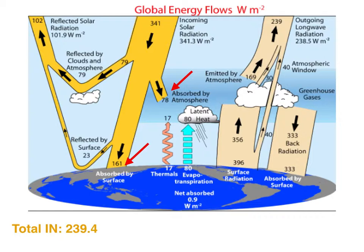The part that gets to the surface and is absorbed by the variety of surfaces there — water, vegetation, and land — and then there's an appreciable amount absorbed in the atmosphere, mainly by water vapor and other absorptive elements in the air. The total for that quantity is 239.4 watts per square meter. So that's Earth's energy income.